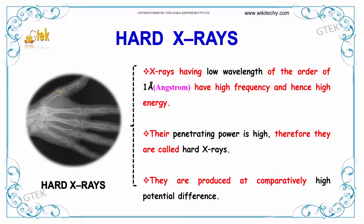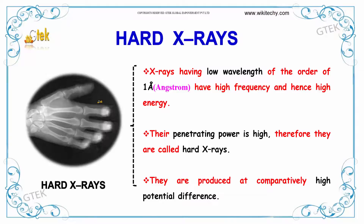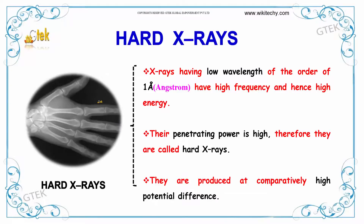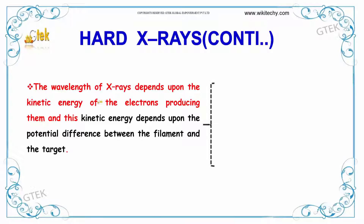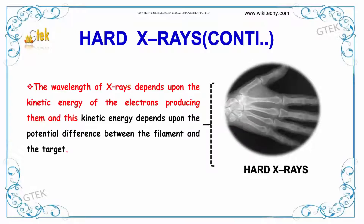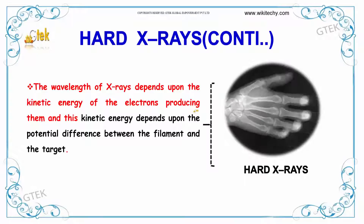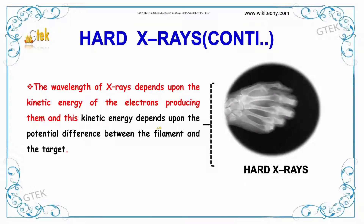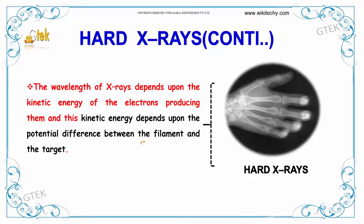You are able to see the X-rays taken on the bones — that's hard X-rays. Moving further, the wavelength of X-rays depends upon the kinetic energy of the electrons producing them, and this kinetic energy depends upon the potential difference between the filament and the target.